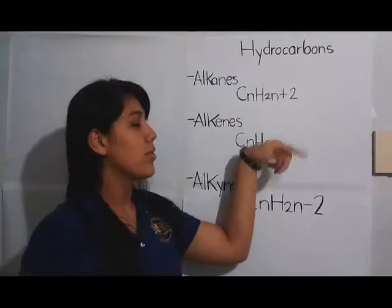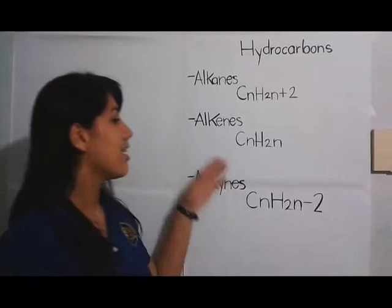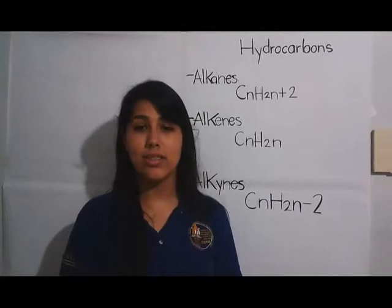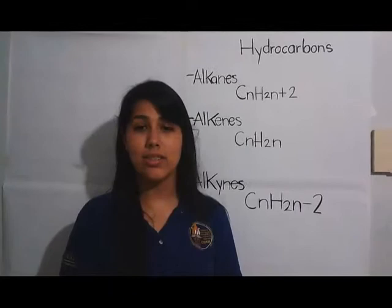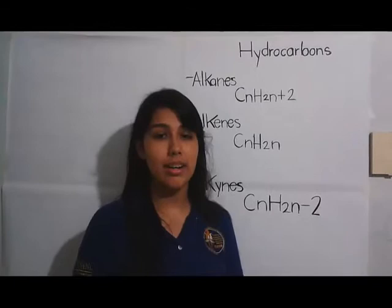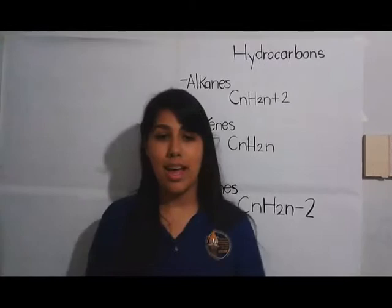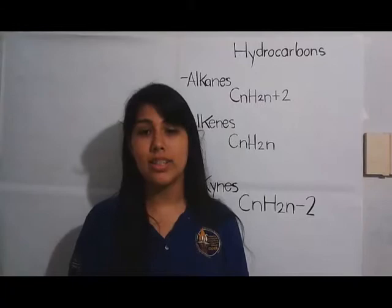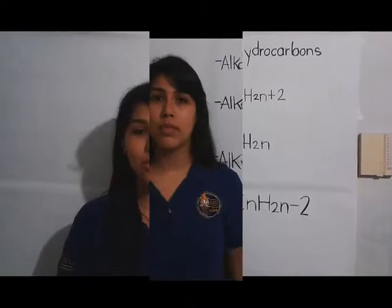Alkenes contain at least one double bond and are classified as unsaturated hydrocarbons. Their general molecular formula is CₙH₂ₙ. Alkynes contain at least one triple bond and are also called unsaturated hydrocarbons; their formula is CₙH₂ₙ₋₂. Aromatic hydrocarbons are planar ring structures with alternating single and double bonds. Those containing the benzene ring are called benzenoid compounds, and those that do not contain the benzene ring are called non-benzenoid.